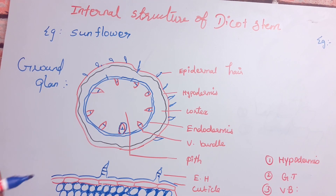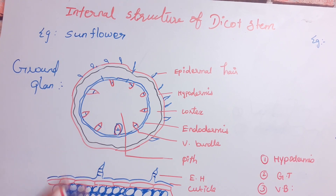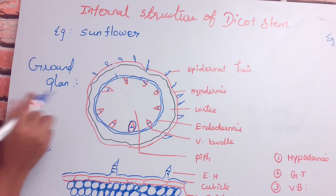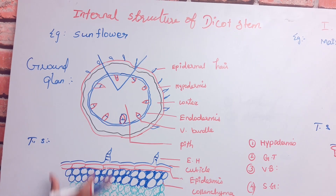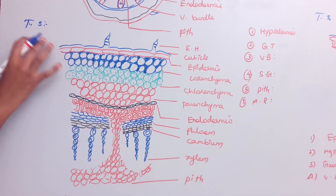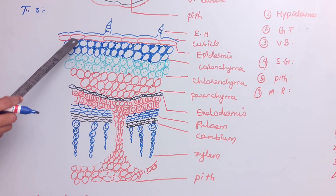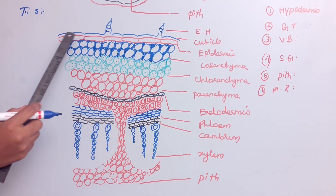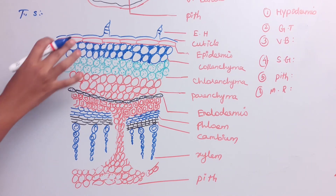If you look at the stem, this is the structure of the stem — especially the sunflower stem. This is the transverse section. This is the full entire structure. The first outermost layer is the epidermis. The epidermis is a single layer made up of barrel-shaped cells.